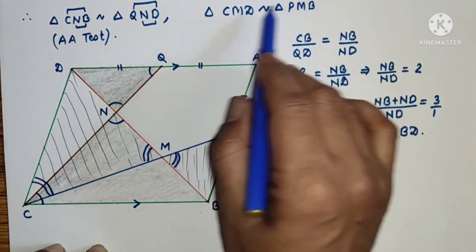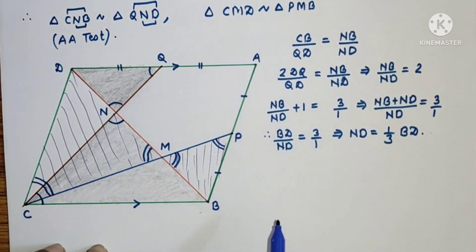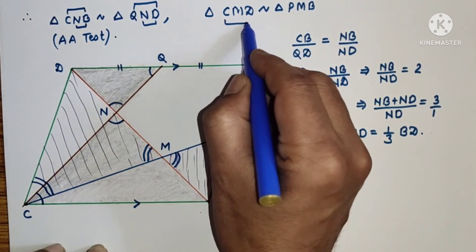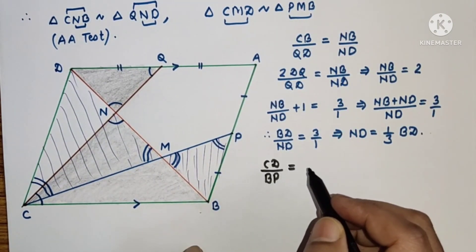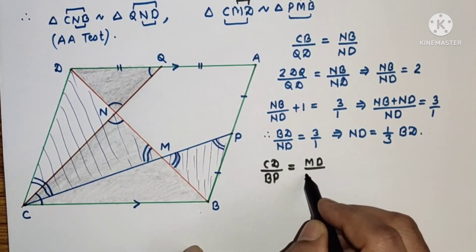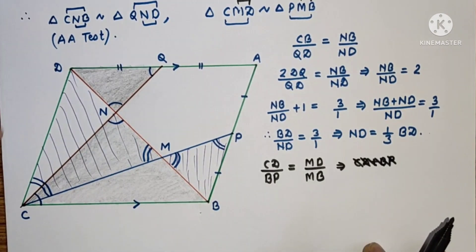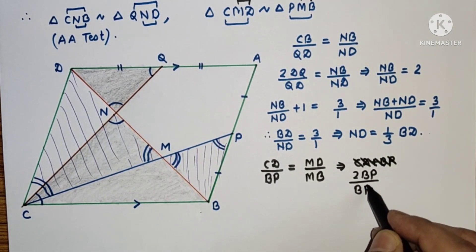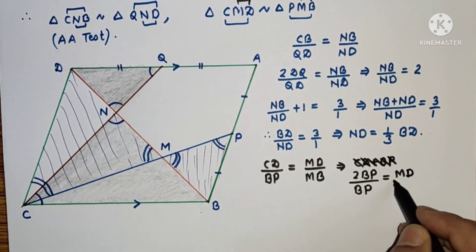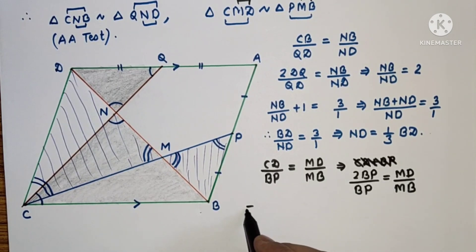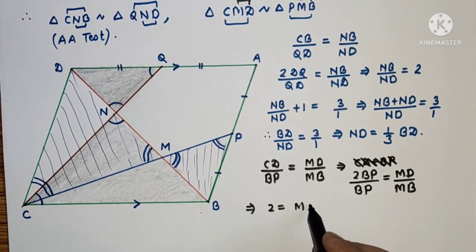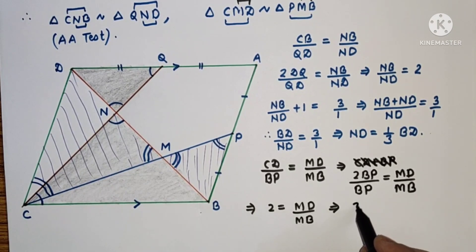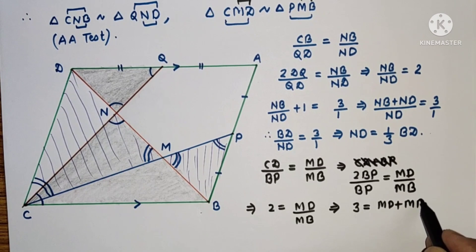Similarly, from the similar triangles CMD and PMB, CD by BP is equal to MD by MB. Since CD is twice of BP, we get MD by MB equals 2. Adding 1 on both sides gives 3 equals MD plus MB by MB.